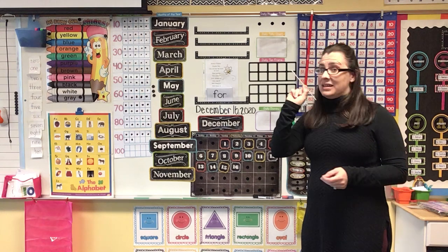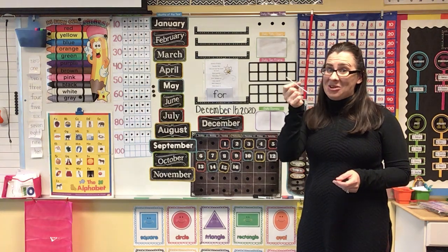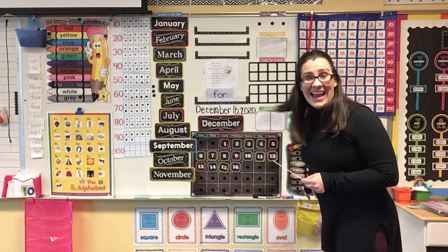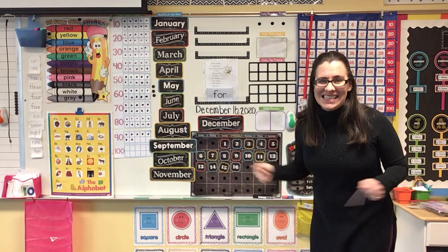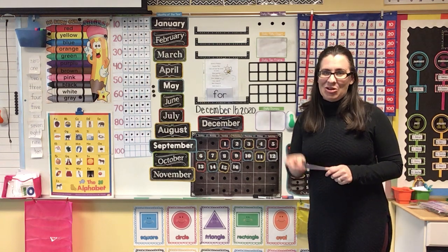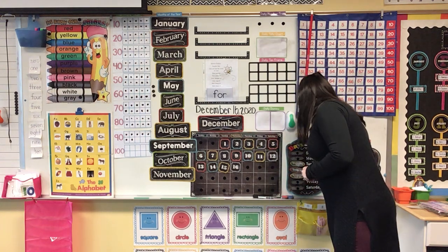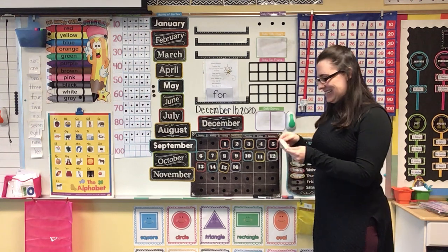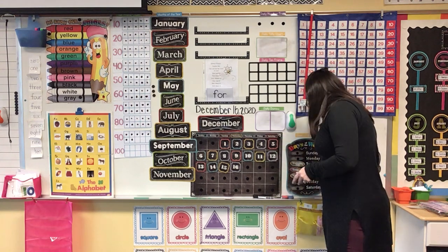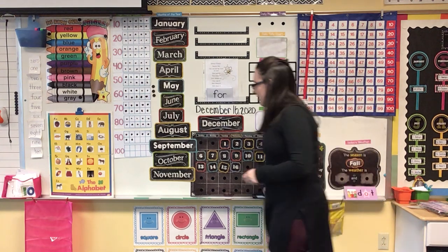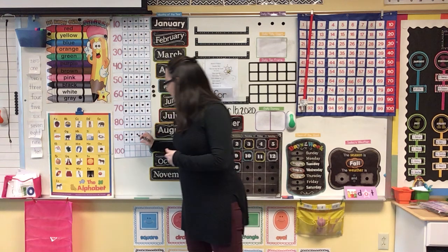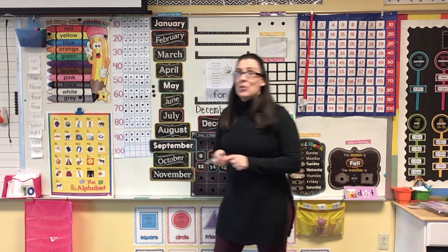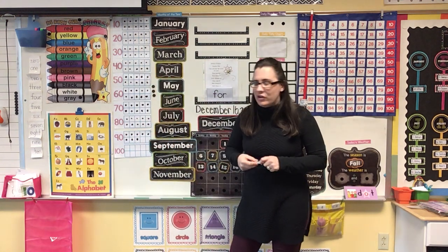We need to add one more straw because we have kindergarten today. Right now we're at 87 days in kindergarten. If we add another straw, we get to 88 days in kindergarten. We need to add another mark over here for 88. Only 12 days left to 100.